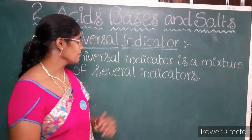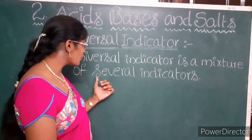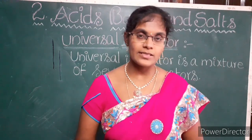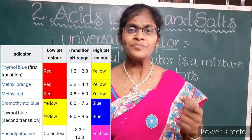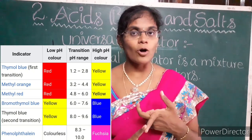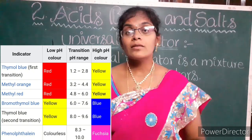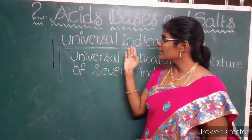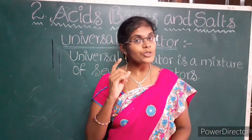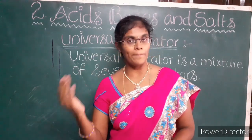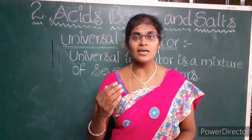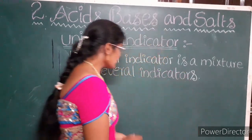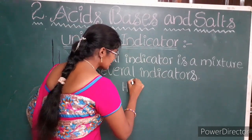What is meant by a universal indicator? A universal indicator is a mixture of several indicators. The main indicators used to prepare it are methyl orange, methyl red, phenolphthalein, thymol blue, etc. Universal indicators are used to know the strength of acids or bases, and they show different colors at different concentrations of hydrogen ions (H+) in an aqueous solution.